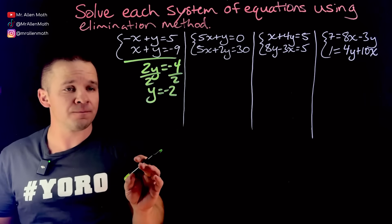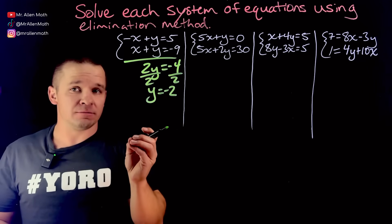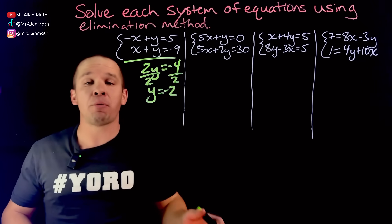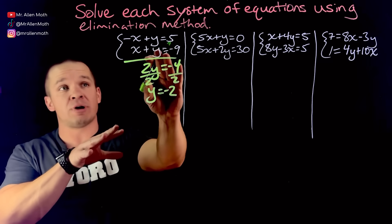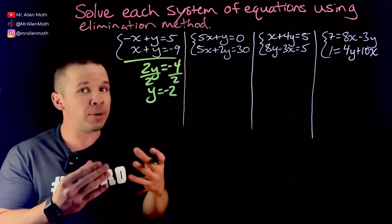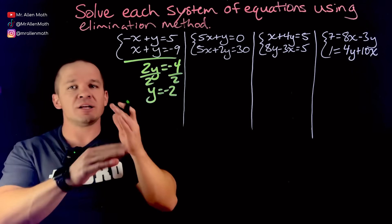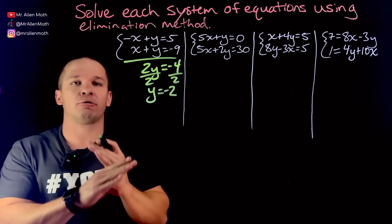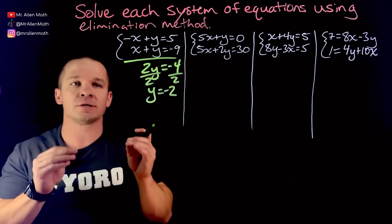But we are not done. The answer to a system of equations is the point at which these two lines, because I can graph each one of these lines, it might help to put it in slope-intercept form, but I can graph them nonetheless. It is where they intersect on that graph. So my answer here is always an ordered pair.